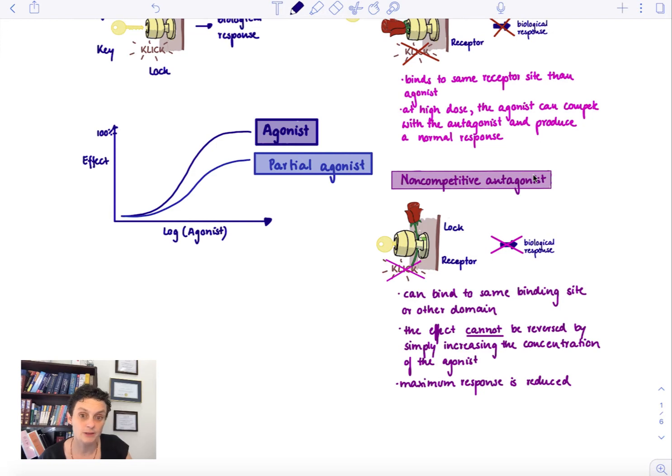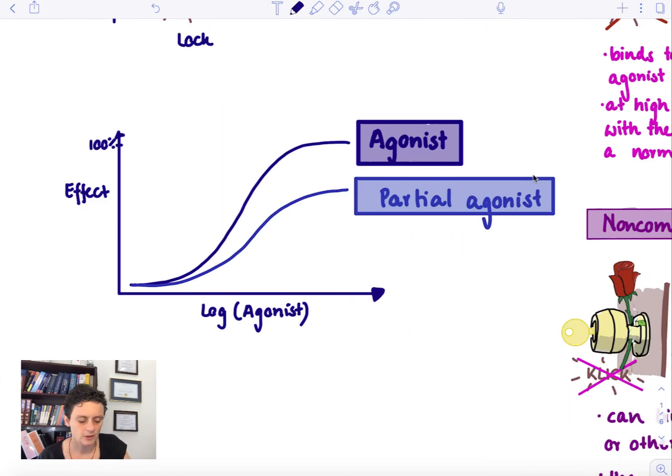So basically something that looks like this here. So here we have on the x-axis increasing concentration of the agonist and then on the y-axis the effect, the response.